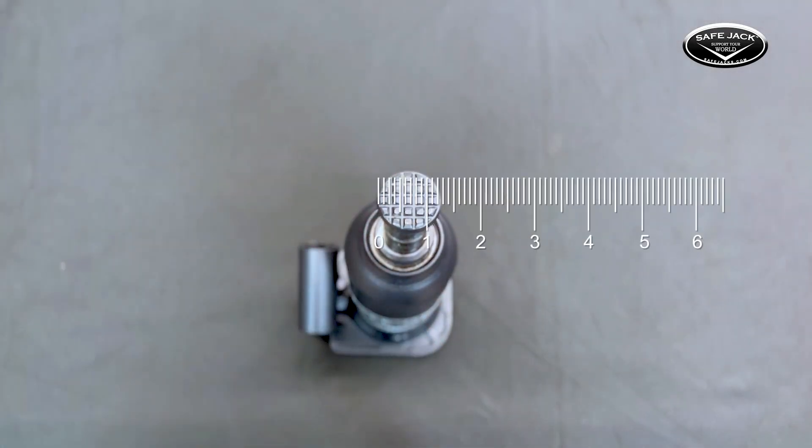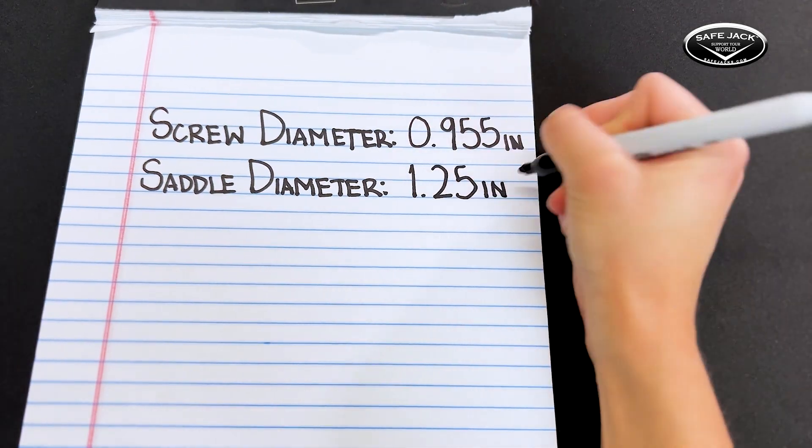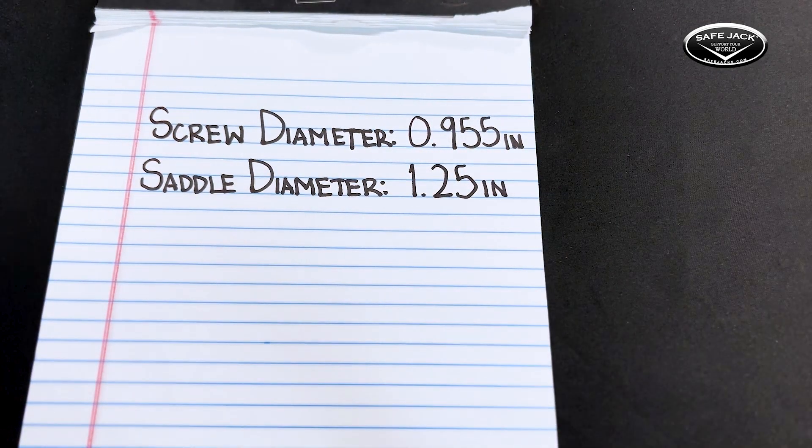Once again, using a ruler, measure the diameter of the saddle as shown. Keep both of these numbers handy to check against the following measurements.